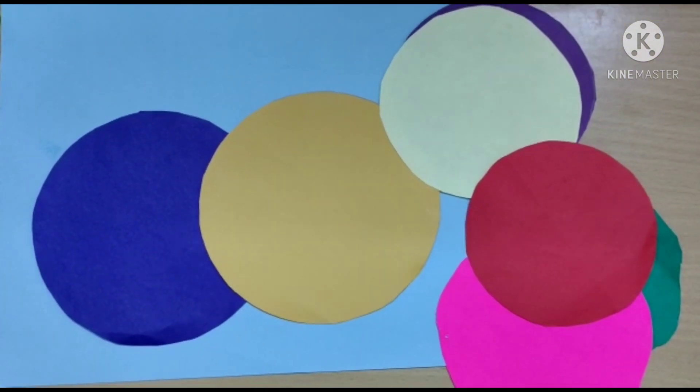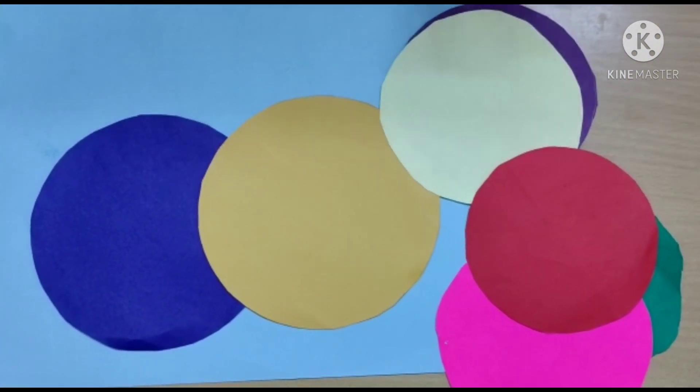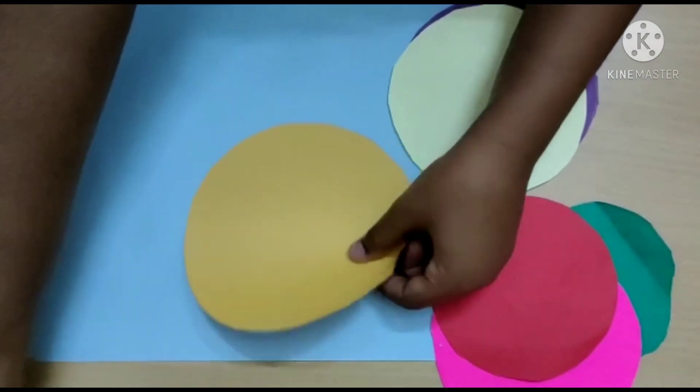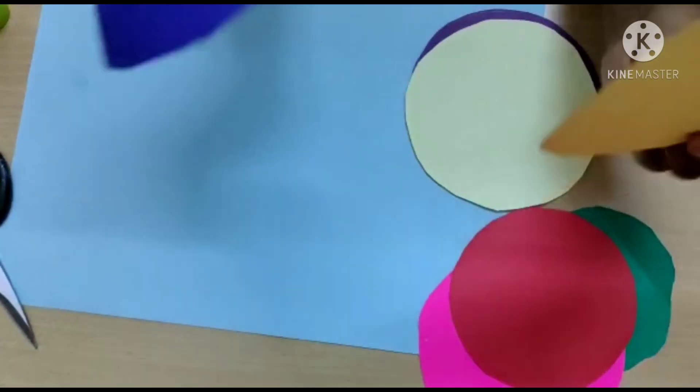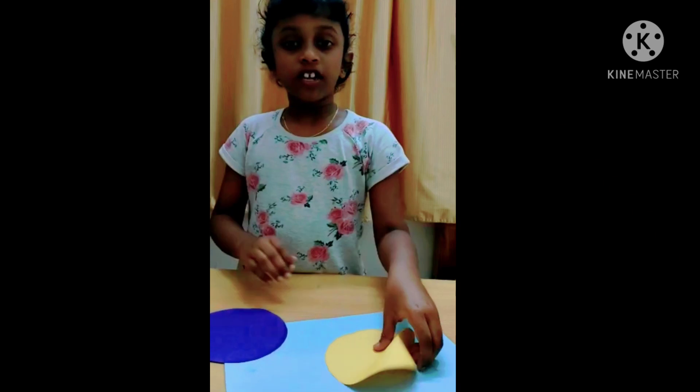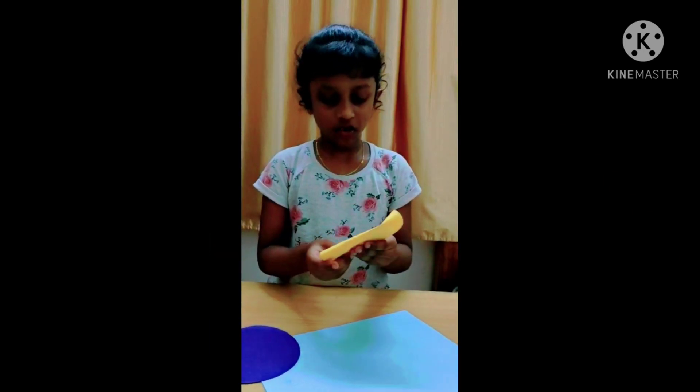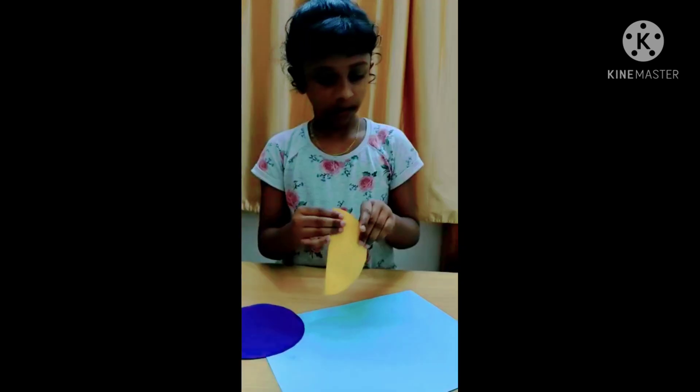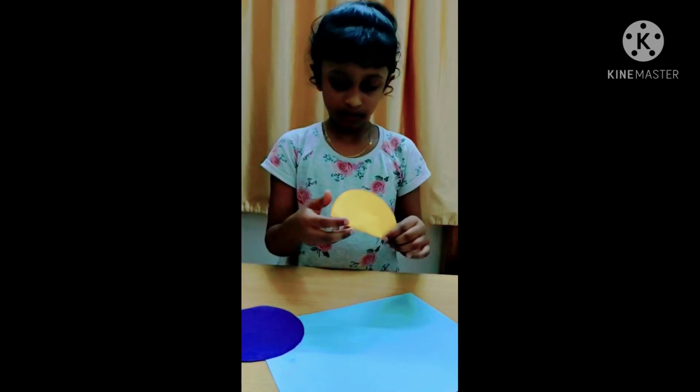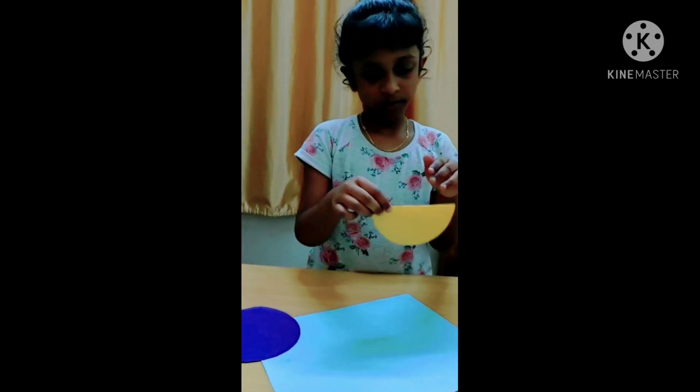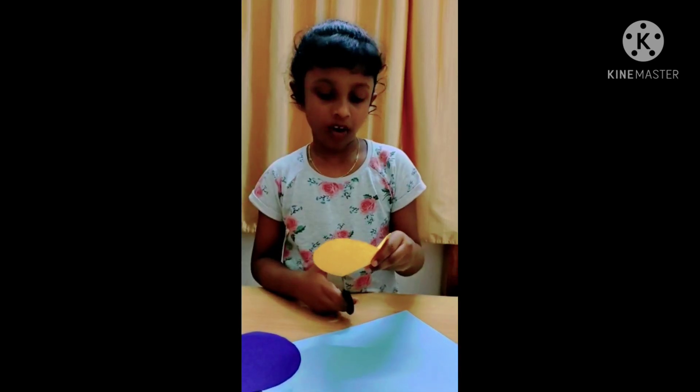We are going to take the first set of same size. We are going to take this circle first and fold it into half. Now cut it.